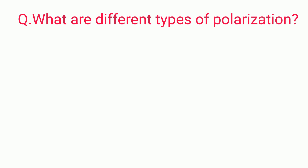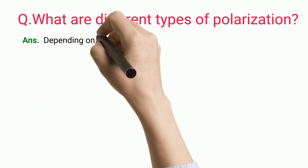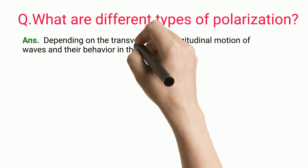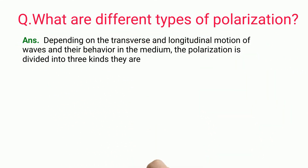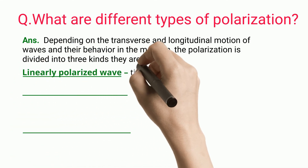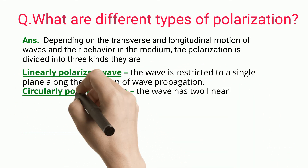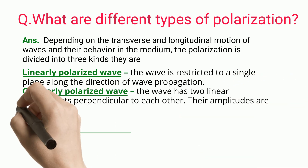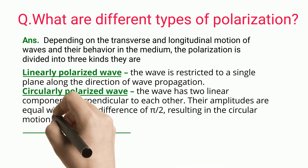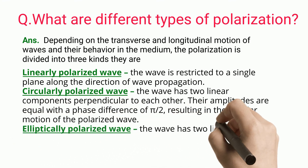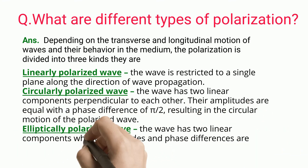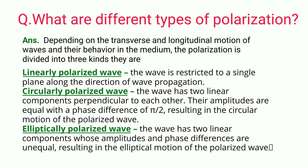What are the different types of polarization? Depending on the transverse and longitudinal motion of waves and their behavior in the medium, polarization is divided into three kinds: Linearly polarized wave — the wave is restricted to a single plane along the direction of wave propagation. Circularly polarized wave — the wave has two linear components perpendicular to each other, with equal amplitudes and a phase difference of π/2, resulting in circular motion of the polarized wave. Elliptically polarized wave — the wave has two linear components whose amplitudes and phase differences are unequal, resulting in elliptical motion of the polarized wave.